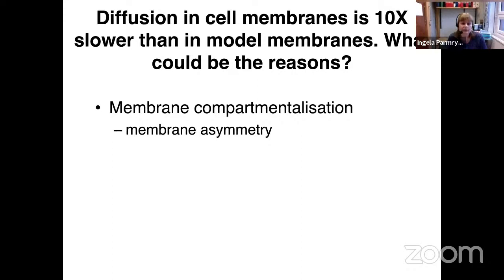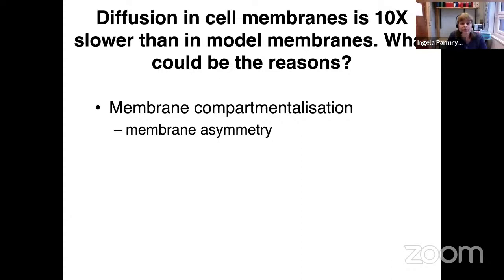One explanation that could perhaps account for this is membrane asymmetry. Techniques now exist for making asymmetric model membranes, but most studies have been performed on symmetric membranes, and we know this does affect molecular behavior. In the plasma membrane, there is quite an uneven distribution of lipids — negatively charged lipids like phosphoinositides and phosphatidylserine are in the cytoplasmic leaflet along with phosphatidylethanolamine, whereas sphingomyelin is mainly in the outer leaflet along with all the glycosylated lipids forming the glycocalyx.